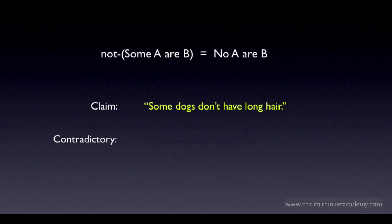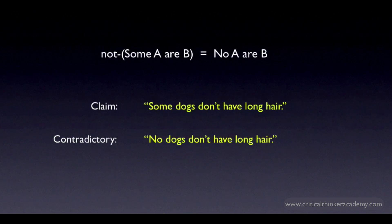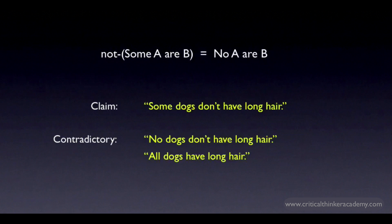Let's try this one: 'some dogs don't have long hair.' The contradictory of this would be 'no dogs don't have long hair.' This is a bit awkward. The easier way to say this is 'all dogs have long hair.' If you recall the previous tutorial, you'll recognize that this is just the rule for the contradictory of a universal generalization. The contradictory of 'all A or B' is 'some A or not B,' which is the form that the original claim has.